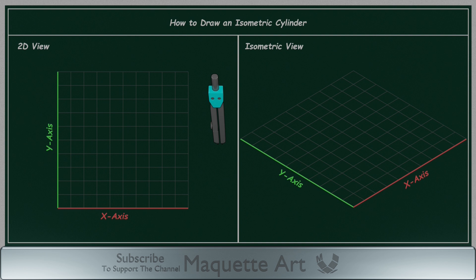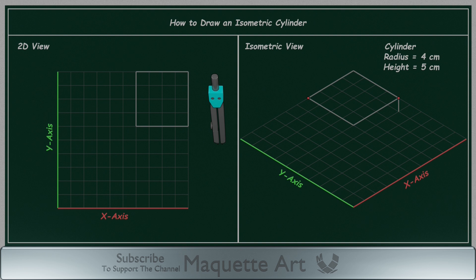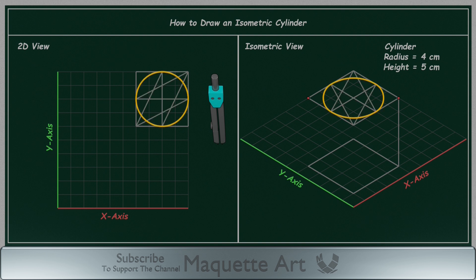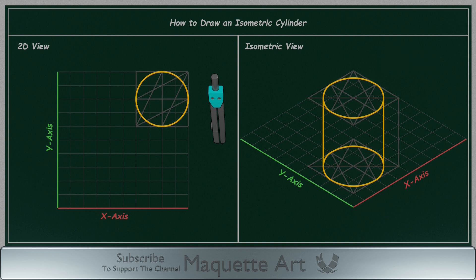Now let's see how to draw a cylinder. We will draw a cylinder of radius 4 cm and a height of 5 cm. Like before, I will draw a square 4 by 4 cm and add a height of 5 cm, so the distance between those 2 squares is 5 cm along the z-axis. Now using the method I just explained, I will draw a circle in both squares — the top and the bottom. Finally, we need to connect those 2 circles to form a cylinder. First we need to find the tangent points by connecting those 2 acute angles. Now we can connect them to finish the cylinder. Let's remove the hidden lines or draw them as dashed lines if required.